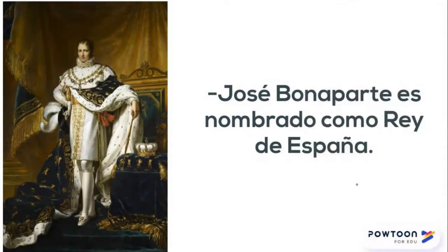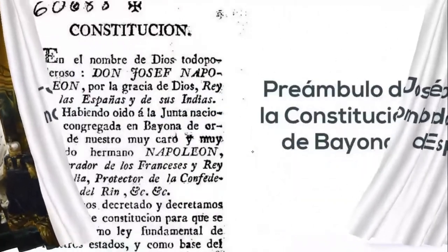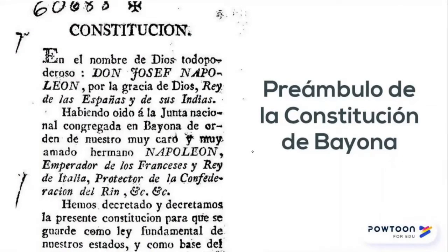Para legitimar el nombramiento de su hermano José Bonaparte como rey de España, se asigna el decreto constitucional de Bayona en el año de 1808. El preámbulo de esta constitución decía: 'En el nombre de Dios Todopoderoso, don José Napoleón, por la gracia de Dios, rey de las Españas y de sus indias, habiendo oído la Junta Nacional congregada en Bayona, de orden a nuestro muy caro y muy amado hermano Napoleón, hermano de los franceses, rey de Italia, protector de la Confederación del Rhin, hemos decretado y decretamos la presente constitución para que se guarde como ley fundamental de nuestro Estado y como base del nuevo reino.'